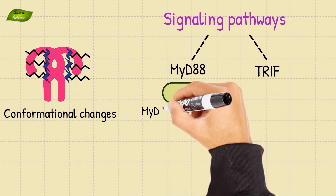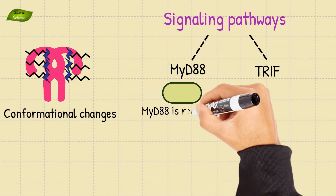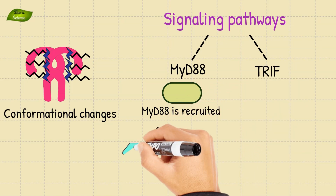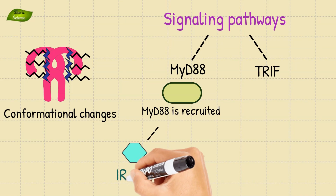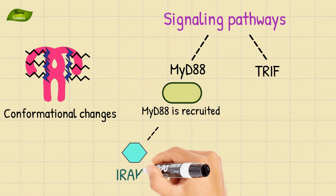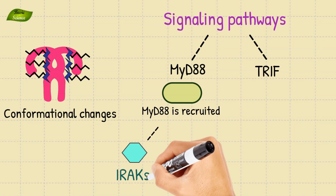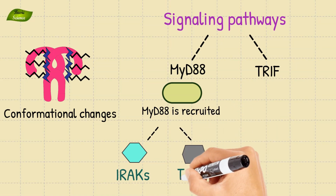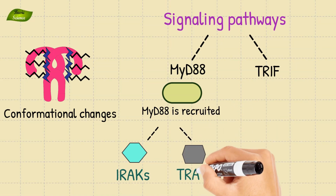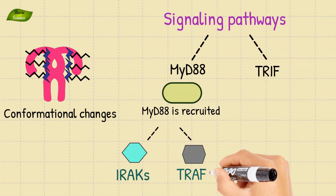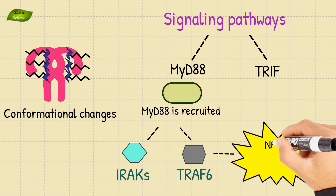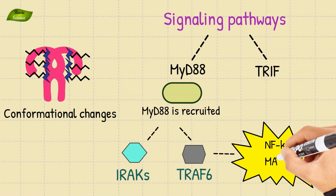In the MyD88-dependent pathway, MyD88 is recruited, leading to the activation of interleukin-1 receptor-associated kinases and tumor necrosis factor receptor-associated factor 6, which is TRAF-6. This activation sets off downstream signaling cascades, including the NF-κB and MAPK pathways.